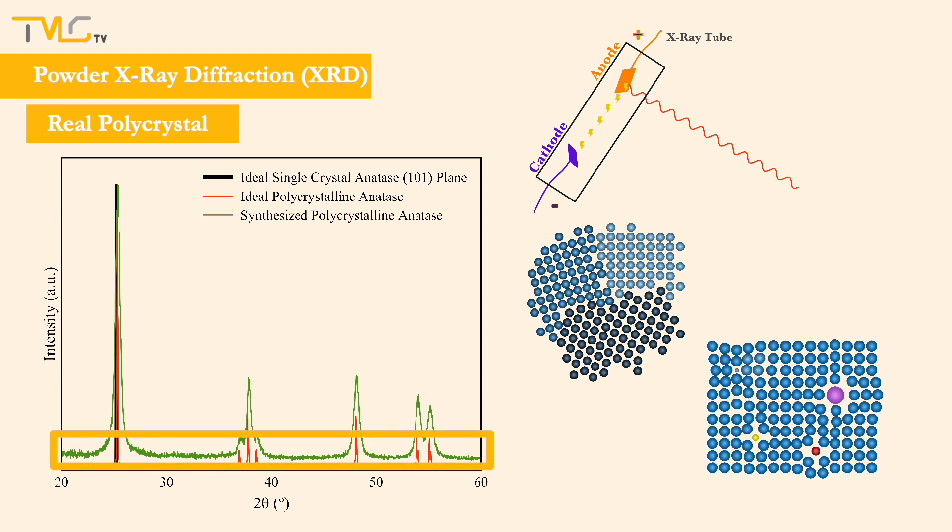The deviation from ideality reflects to the collected data as noteworthy background noise, decrease in signal-to-noise ratio, and as the broadening of the peaks. Although the background noise and the lowered signal-to-noise ratio provide no additional information about our specimen and have negative impact on our data quality, luckily, peak broadening can provide us rough but useful information about the crystallite sizes, so long as they are smaller than 120 nm.